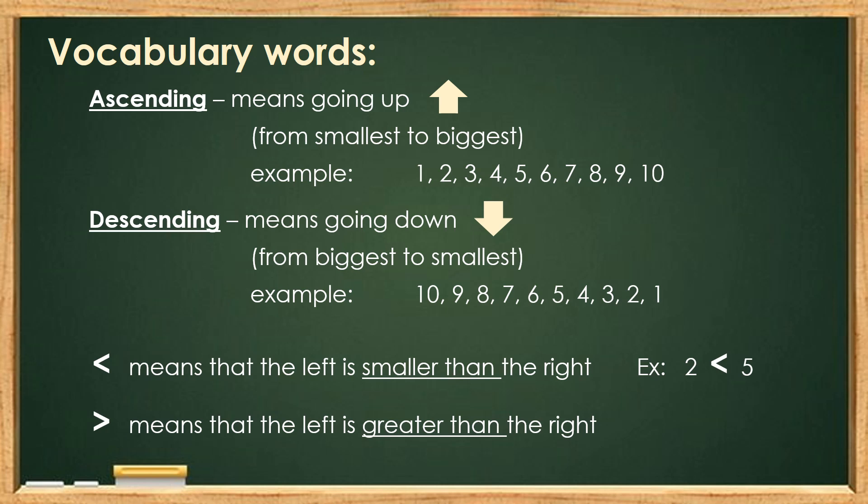This is the greater than symbol. Greater than means that the left is greater than the right. For example, the number 5 is greater than the number 2.